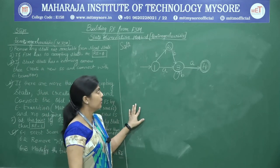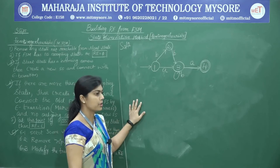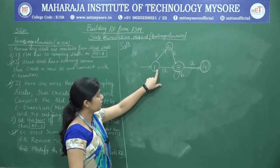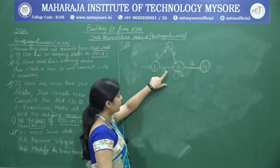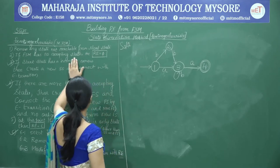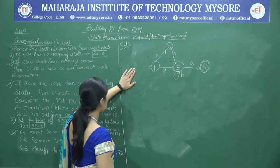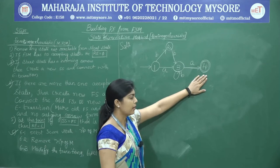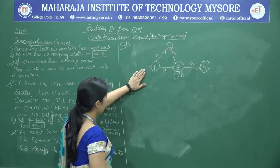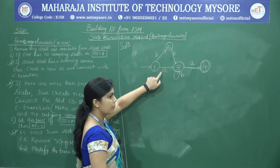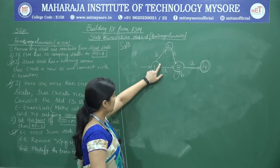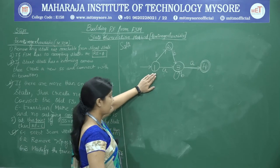Now we solve the second problem. Step 1: we examine whether there are any dead states. There are no dead states — all states have at least one outgoing arrow except the final state. Step 2: there is at least one final state, so step 2 does not apply. Step 3: we check whether the start state has any incoming arrow. There is no incoming arrow, so no new start state is needed.